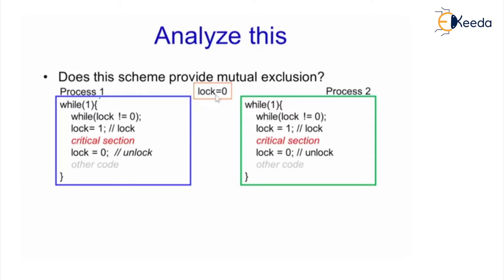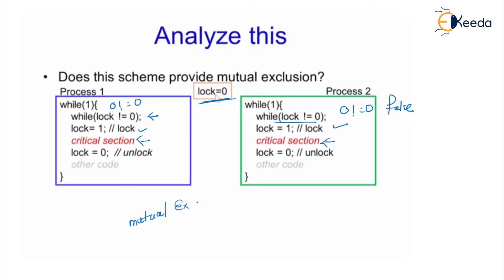If lock is zero and both process one and process two simultaneously check whether lock is not equal to zero, both find false. An interrupt occurs, then the same statement executes again — both find false, so both set lock equal to one and both enter the critical section. This means mutual exclusion is violated.